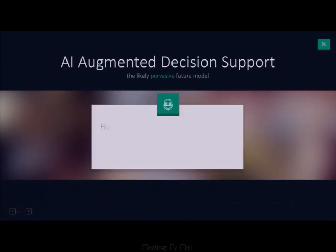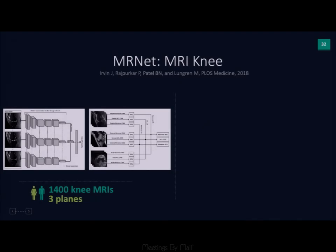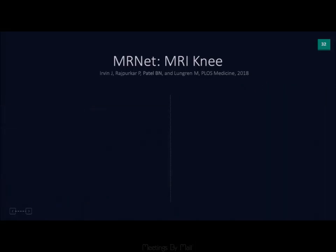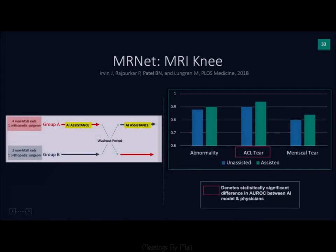This is the future: AI augmented decision support, where human-machine partnership unlocks maximal diagnostic performance. We trained a neural network for MRI of the knees to classify normal versus abnormal, recognize ACL tears, and meniscal tears — achieving high AUCs. We then gave non-musculoskeletal radiologists and orthopedic surgeons knee MRI exams with and without AI assistance. Performance was better with AI assistance.